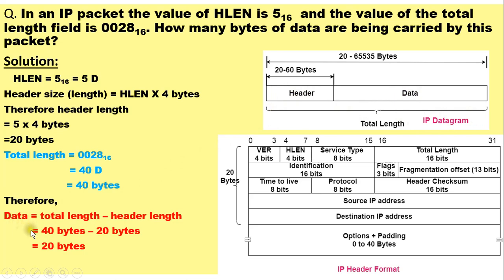Therefore, the data is equal to 40 bytes minus 20 bytes, because the total length field is 40 bytes and the header size is 20 bytes. Therefore, the data bytes are equal to 20 bytes — so 20 bytes of information is carried in the IPv4 datagram in this case. This completes the example. Thank you.